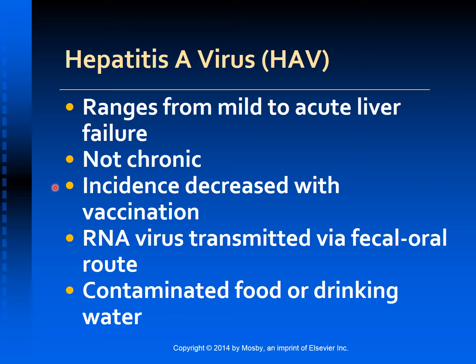Hepatitis A virus is an RNA virus transmitted primarily through the fecal-oral route. It frequently occurs in small outbreaks caused by fecal contamination of food or drinking water. Poor hygiene, improper handling of food, crowded situations, and poor sanitary conditions are contributing factors. Transmission occurs between family members, institutionalized individuals, and children in daycare centers. Foodborne hepatitis A outbreaks are usually due to food contaminated by an infected food handler.